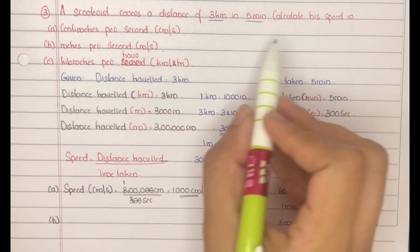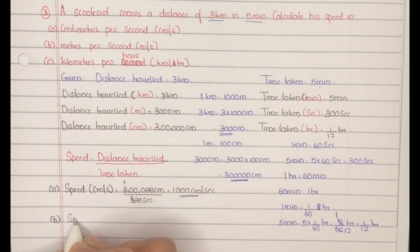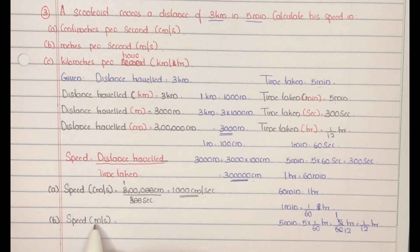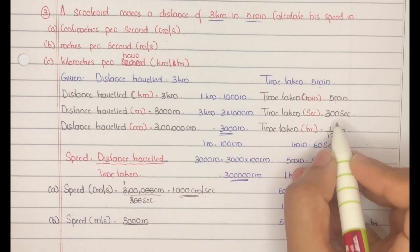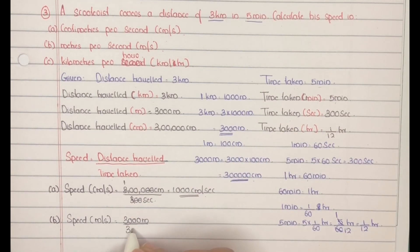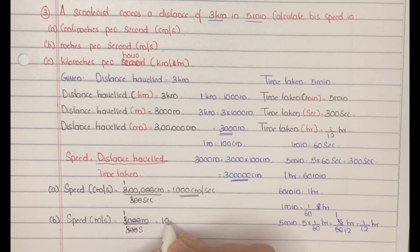Part B: speed in meters per second equals distance traveled in meters divided by time taken in seconds, that is 3000 meters by 300 seconds. Canceling one zero from each gives us 10 meters per second.